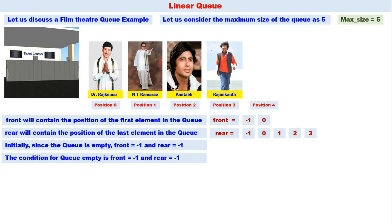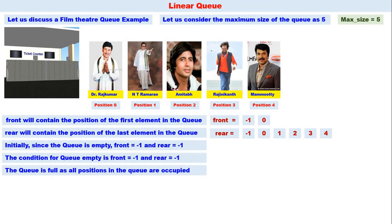Another superstar comes to the queue. We increment rear, so rear becomes four. That is Mohanlal sir, superstar of the Malayalam film industry. Dr. Rajkumar is the first person and Mohanlal sir is the last. Front equals zero and rear equals four. Now all positions in the queue are occupied — the queue is full. The condition for queue full is rear equals max size minus one; here max size is five, so rear equals four.